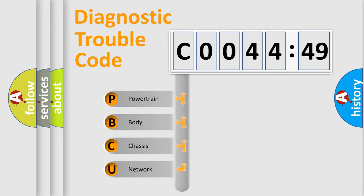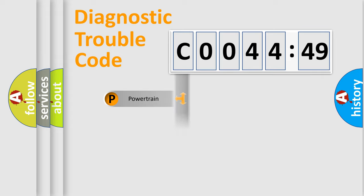If the second character is expressed as zero, it is a standardized error. In the case of numbers 1, 2, 3, it is a more prestigious expression of the car-specific error.